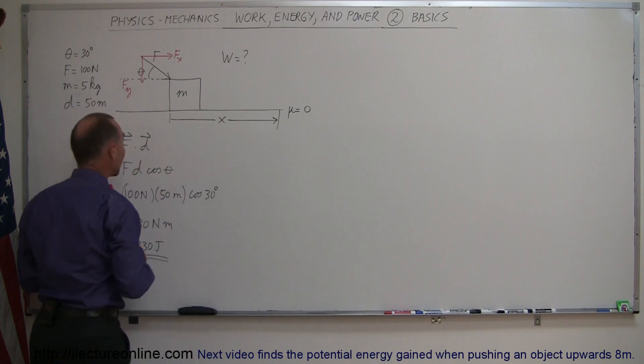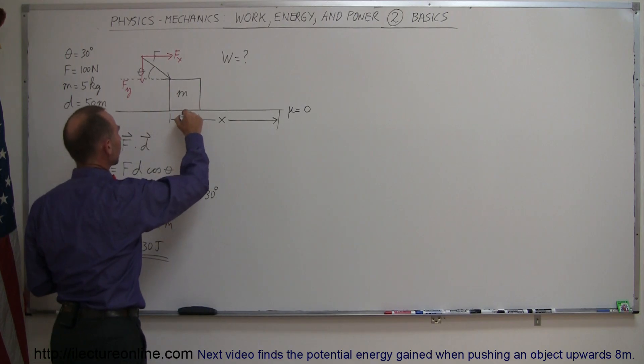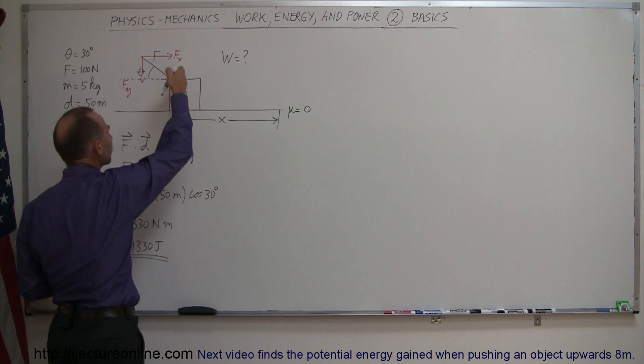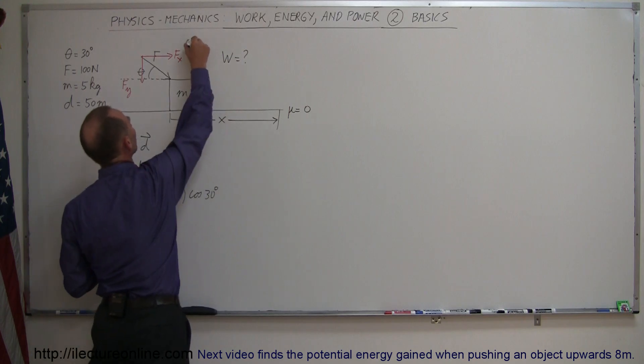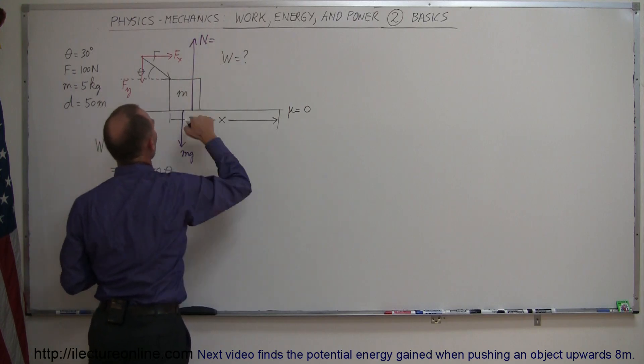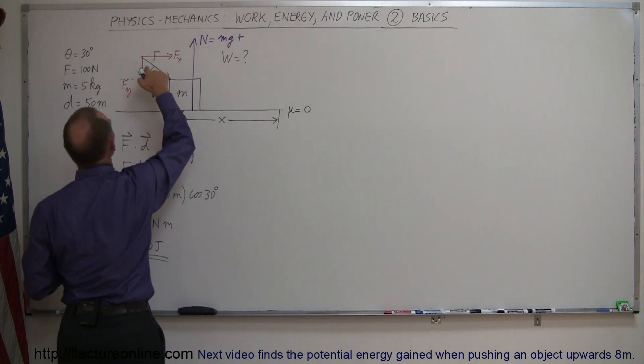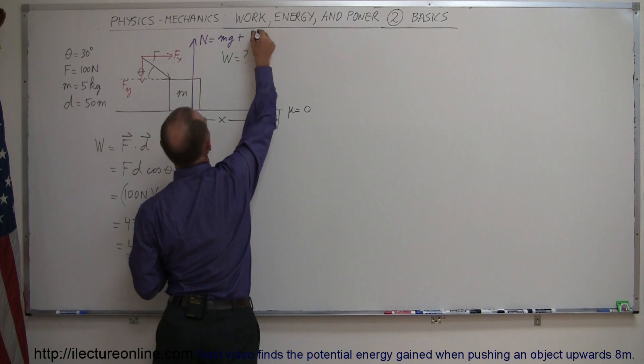And then you realize that if we look at all the forces acting on the mass here, we have the force of gravity, which is pushing down mg, and then we have this vertical component, F sub y, pushing down on the block downward as well. So now we have a normal force pushing back, and the normal force here will be the sum of the weight of the block plus the component of the force pushing the block, which is downward, plus the F sub y.